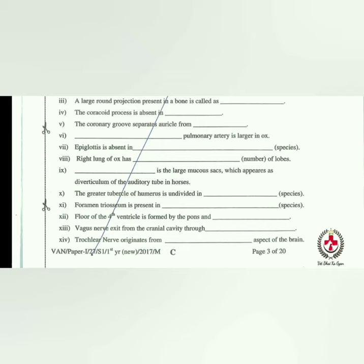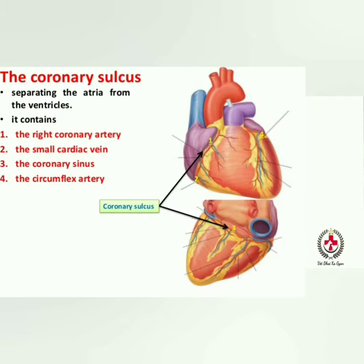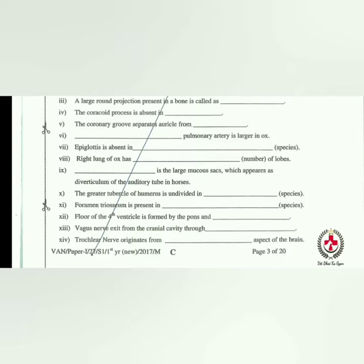The coronary groove separates the auricle from the ventricle — it is also called the atrioventricular septum. The right pulmonary artery is larger in the ox — it is both longer and broader.